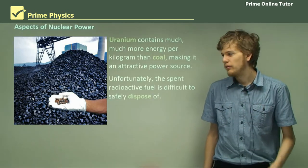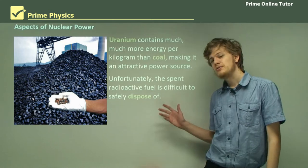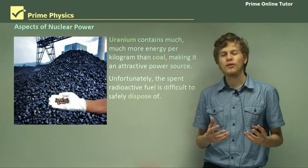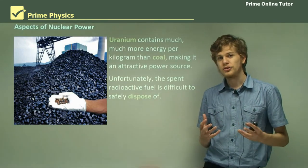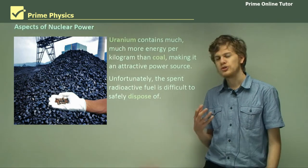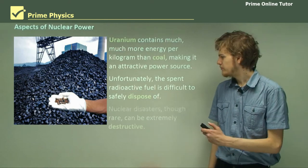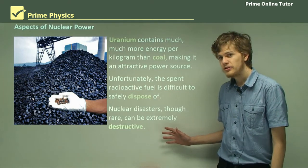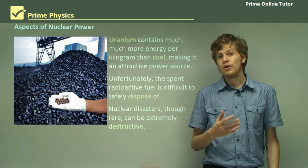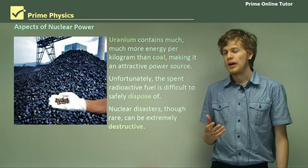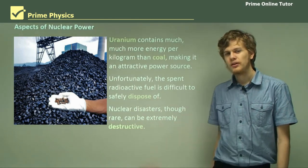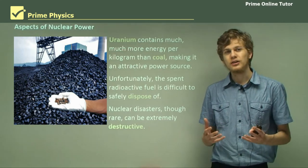One of the problems with nuclear power plants is that the spent radioactive fuel cannot be safely disposed of very easily. Radioactive materials are able to damage living things if they are exposed to them for long enough. Nuclear disasters are another drawback of using nuclear reactors, and although they're very rare — occurring perhaps two or three times in a hundred years — they can be extremely destructive and produce danger over a very wide area.